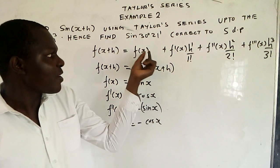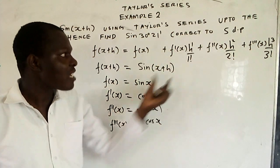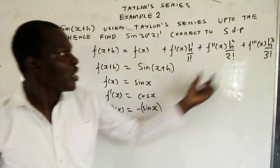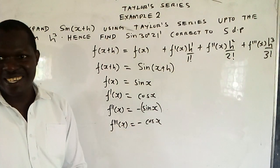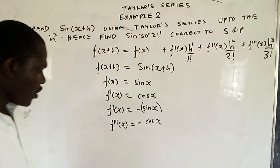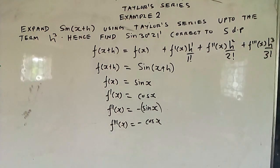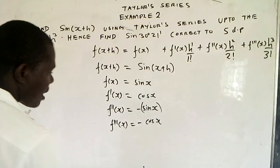We've now found everything: f of x, f prime of x, f double prime of x, and f triple prime of x. The next thing we do is just substitute.